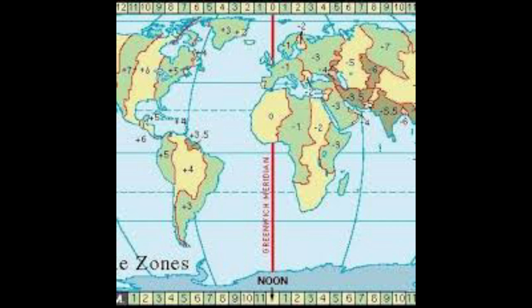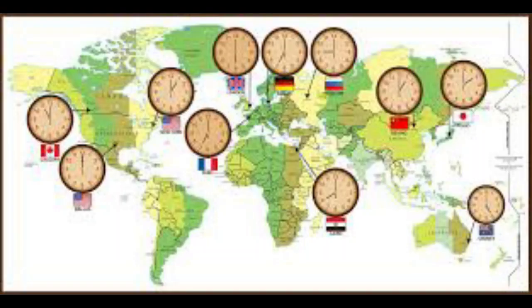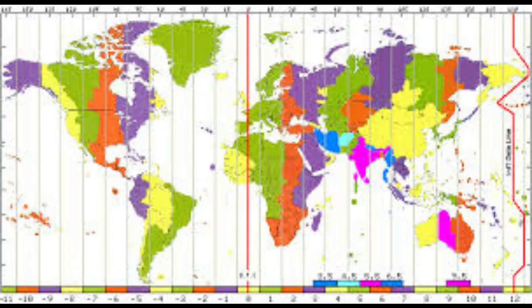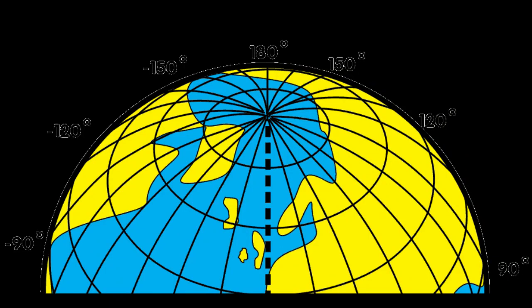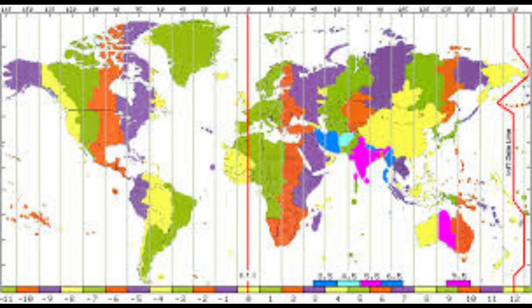Now let us see what is a standard meridian. There are 24 time zones in the world. The earth takes one day to rotate on its axis, so in one hour the earth rotates 15 degrees. In 24 hours — one full rotation — it covers 360 degrees of longitude. So for one hour the earth rotates 15 degrees, and for one degree it takes four minutes. This is the world time zone map.